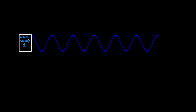Imagine you've got a wave source. This could be a little oscillator creating a wave on a string, a paddle that goes up and down creating waves on water, or a speaker that creates sound waves. This could be any wave source whatsoever — it creates a nice simple harmonic wave.